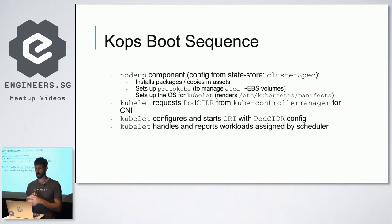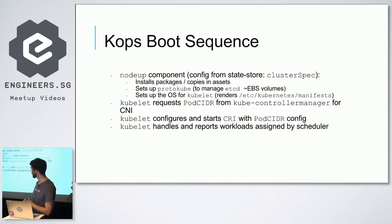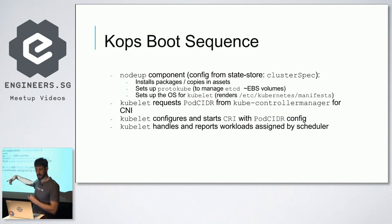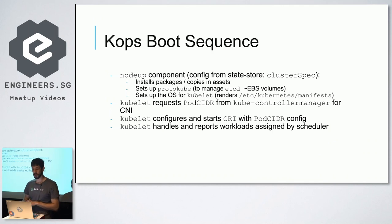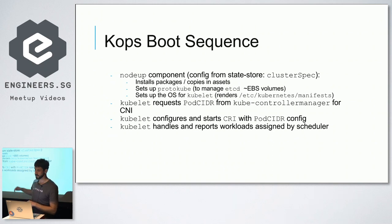The first thing that runs on your node is a NodeUp component that downloads your cluster manifest and cluster definition, and prepares any assets you need — installing packages or doing other things. You can customize that using hooks you specify for your Kubernetes cluster generation. NodeUp then sets up Protocube, which manages the etcd volumes and handles auto-recovery of etcd.